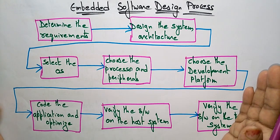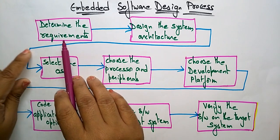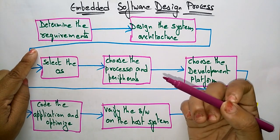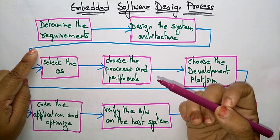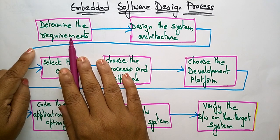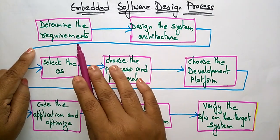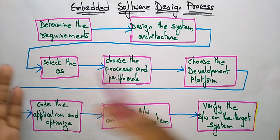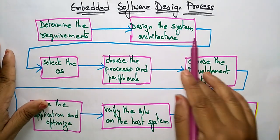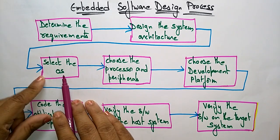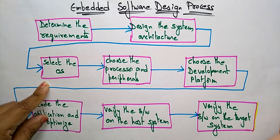The first step is to determine the requirements — what requirements you need to design software for your embedded system. After gathering the requirements, the second step is to design the system architecture, which is a pictorial representation of your requirements.